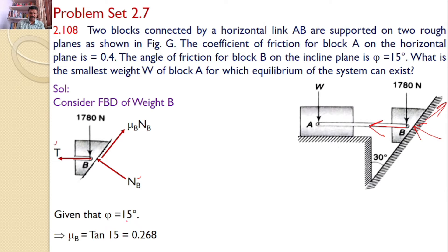Given that the phi value is 15 degrees, hence the coefficient of friction mu is equal to tan 15, that is 0.268. So, mu B value is 0.268. Let us transfer all these three forces onto a separate XY plane. So, the first one is the self-weight, 1780 Newtons. Second one is the frictional force, 0.268 into NB. Next one is the reaction force, NB. And the tensile force, T.